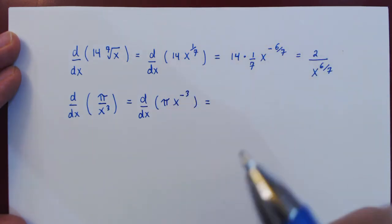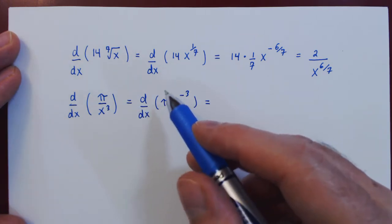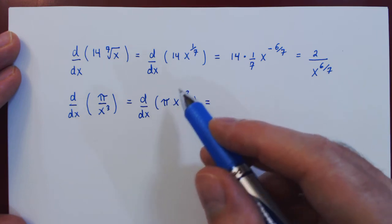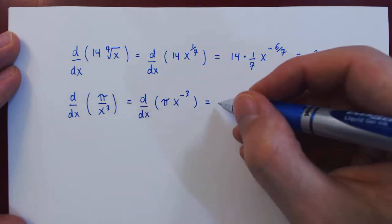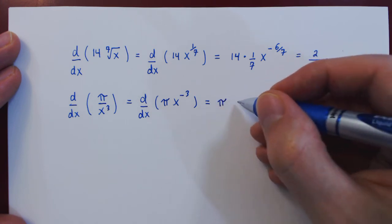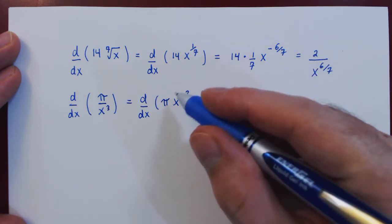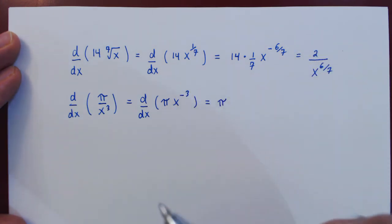And now we can again use the constant multiple rule and the power rule of differentiation. Pi is a constant times a function of x. So when we differentiate, pi will remain where it is, then times the derivative of the function of x. Once again, we apply the power rule.